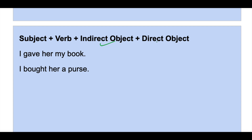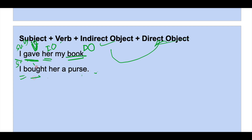Next: subject plus verb plus indirect object plus direct object — both objects are present. 'I gave her my book' — 'I' is subject, 'gave' is verb, 'my book' is direct object (what I gave), and 'her' is indirect object (to whom I gave). 'I bought her a purse' — 'purse' is direct object, 'her' is indirect object (I bought a purse for whom? For her).